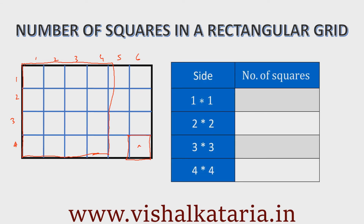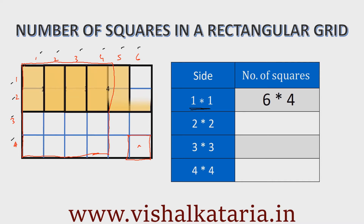Let's find the answer. Starting with 1 by 1 squares: there are 6 along the length and 4 along the width, so the total is 6 multiplied by 4, which is 24. For 2 by 2 squares: along the length we can fit 5, and along the width we can fit 3. So the total number of 2 by 2 squares is 5 multiplied by 3, which is 15.